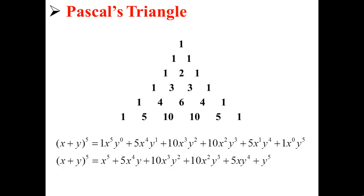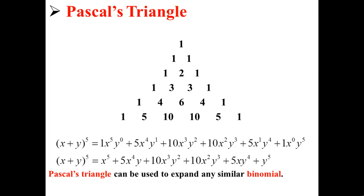Now we can simplify this a little bit further. We have the full expansion of our binomial: x plus y to the fifth equals x to the fifth, plus 5x to the fourth y, plus 10x to the third y squared, plus 10x squared y to the third, plus 5xy to the fourth, plus y to the fifth. Instead of having to multiply over and over again — which would have taken a long time — we just pulled these values directly out of Pascal's triangle. Pascal's triangle can be used to expand any similar binomial.